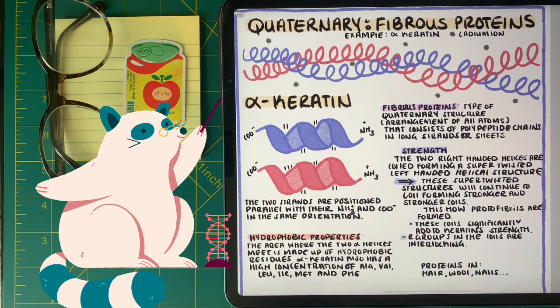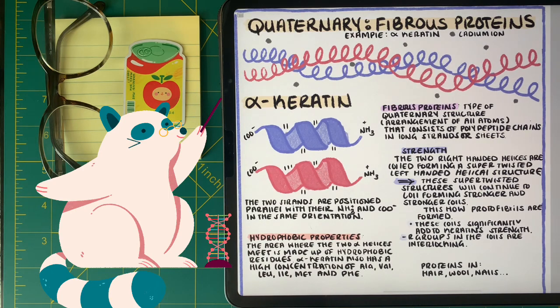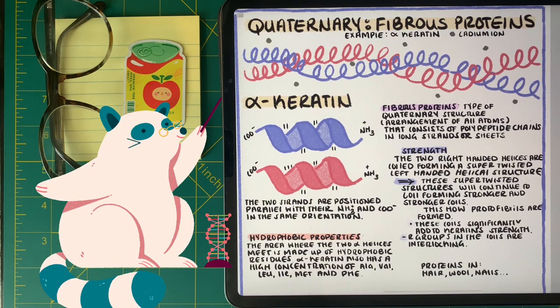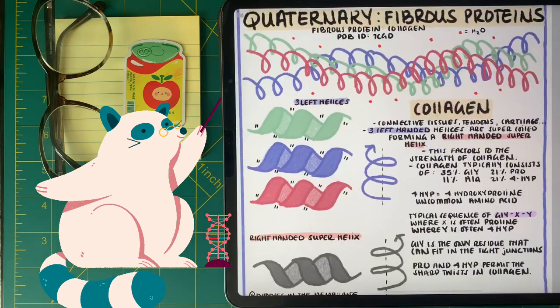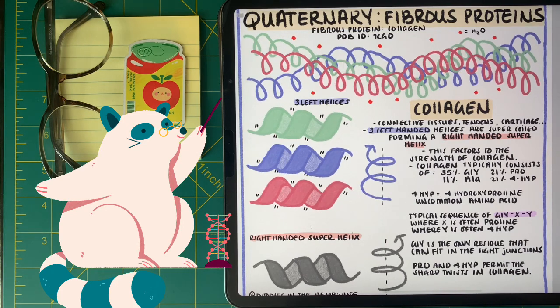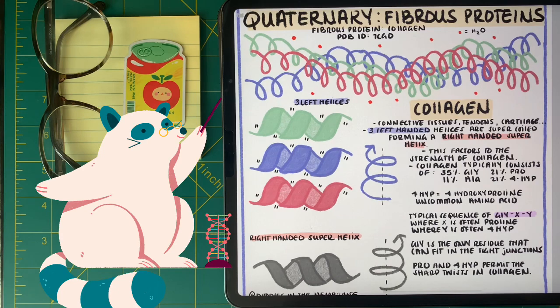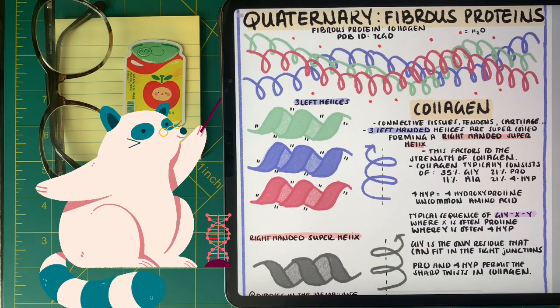There are some protein structures that are just consistent of repeated secondary structures. For example, alpha keratin, when we think about hair and nails, is just two right-handed alpha helices that are coiled and twisted together to form a really strong, packed, left-handed helix. And this is what gives keratin its strength. The trend of having tightly-wounded helices for strength is something that we see repeated with collagen. That's in connected tissues, tendons, and cartilage, for example. In this case, we have three left-handed helices that are tightly-wounded against and with each other to form a really tight right-handed superhelix.